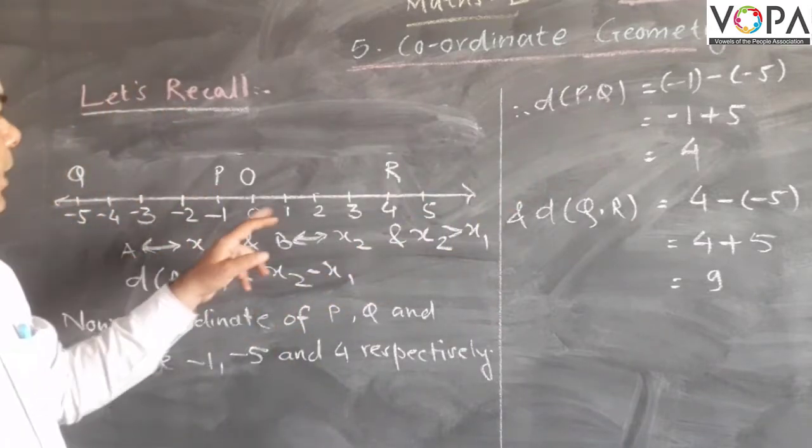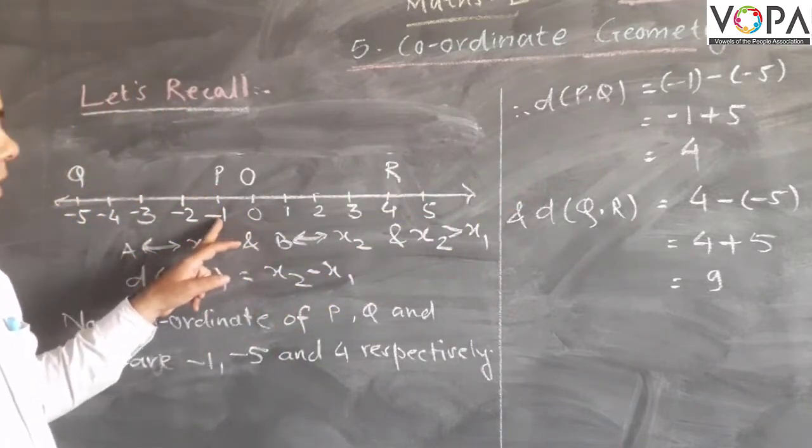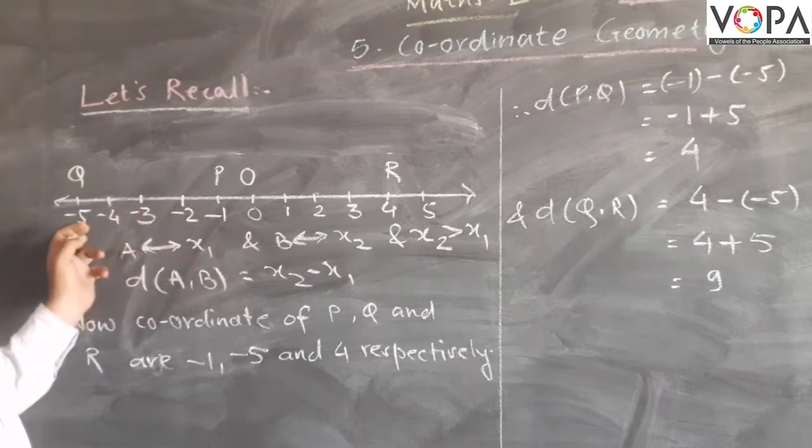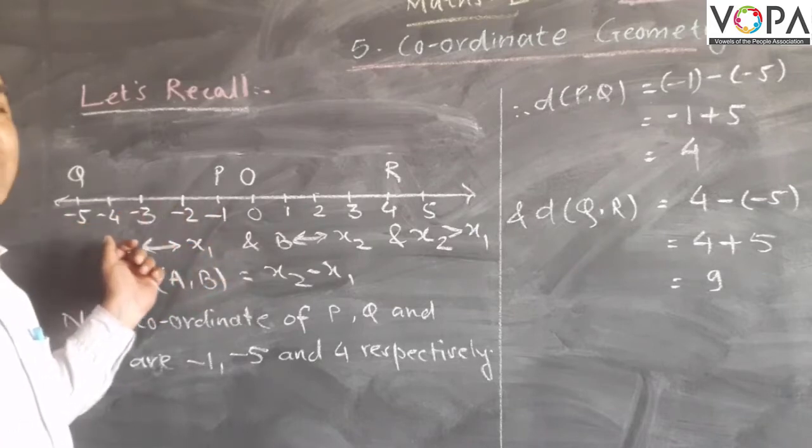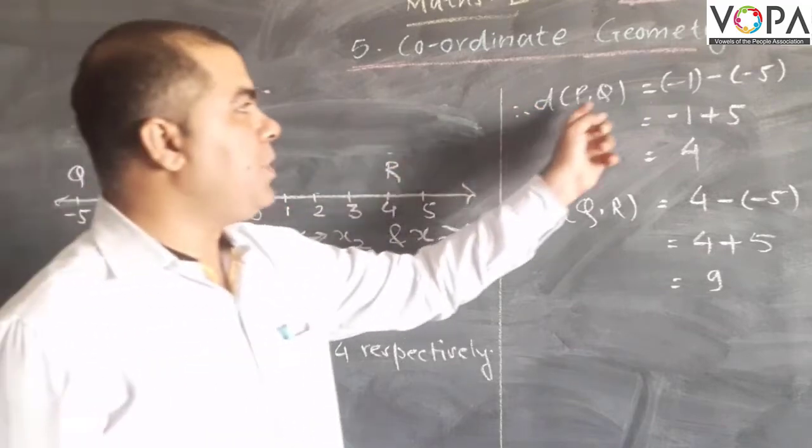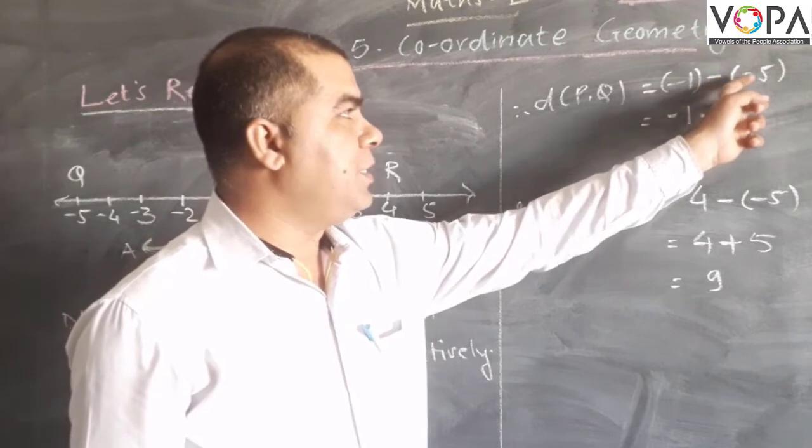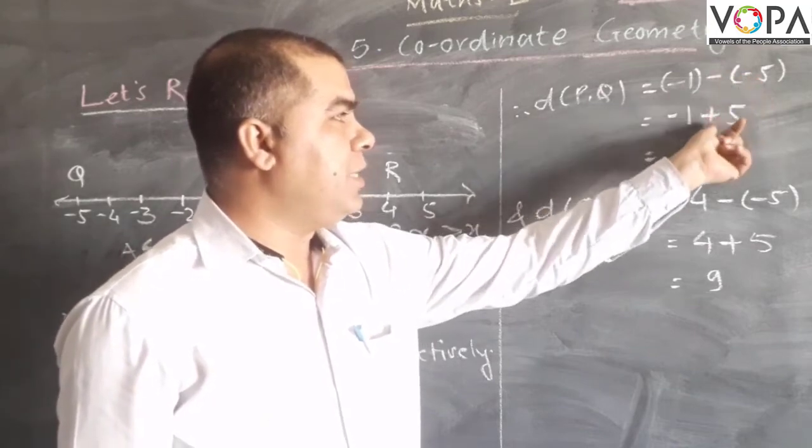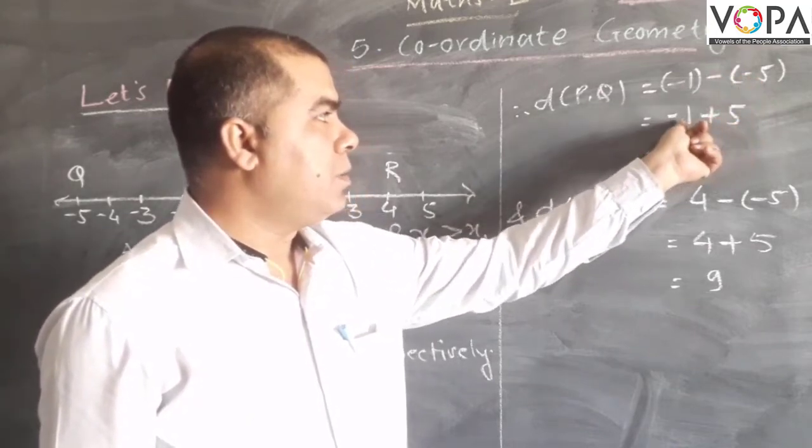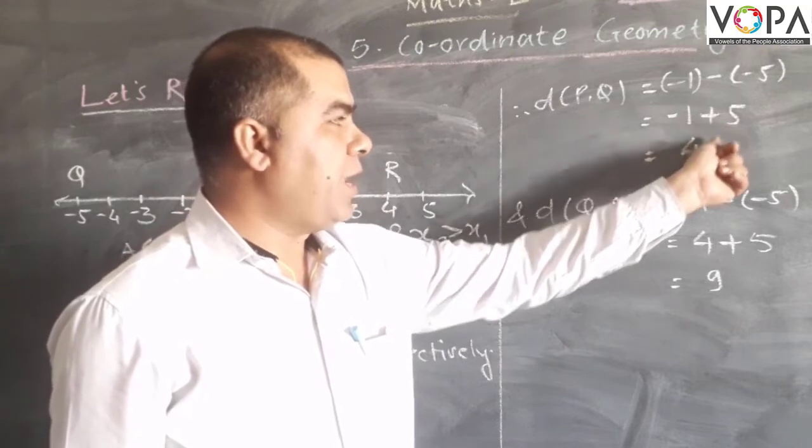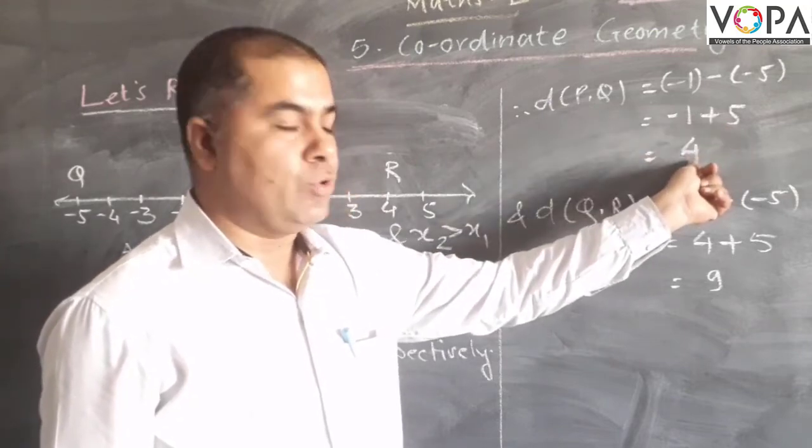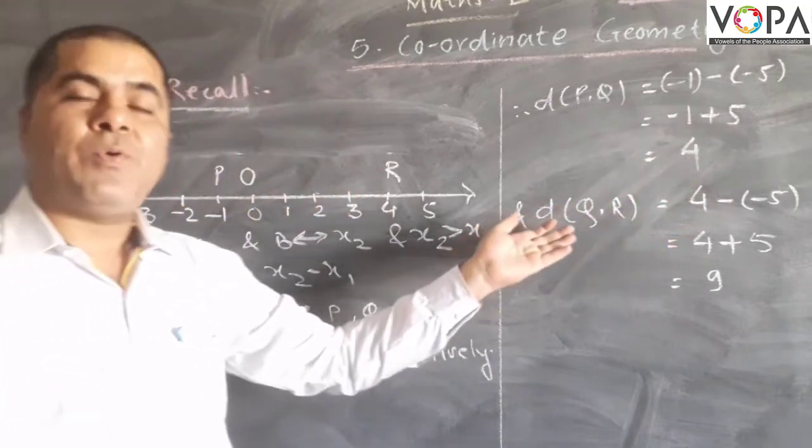The coordinate of P is -1 and Q is -5. Now -5 is smaller than -1, therefore distance PQ is given by -1 minus (-5). Negative of negative, that is going to be positive: -1 + 5, that equals 4.